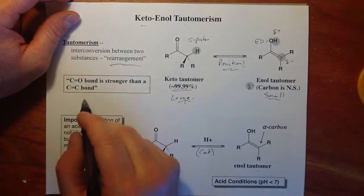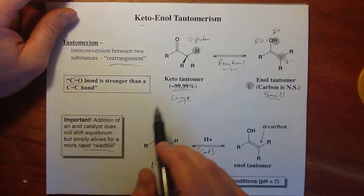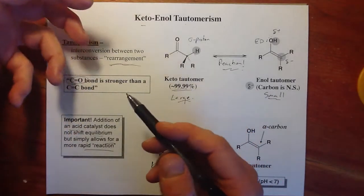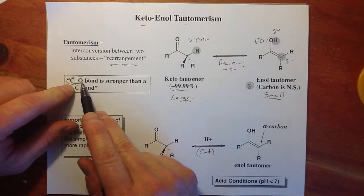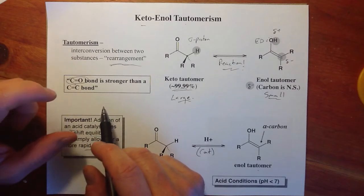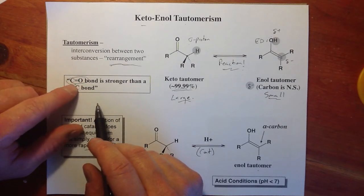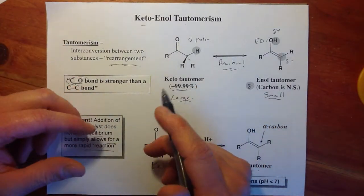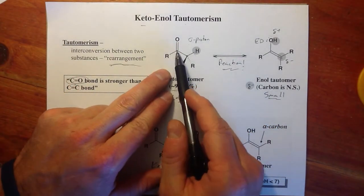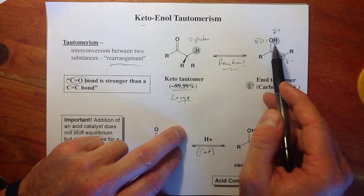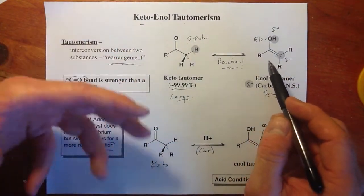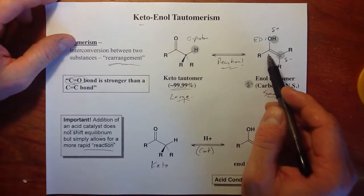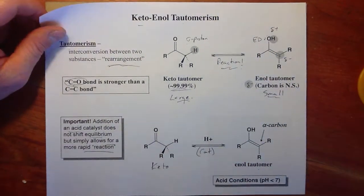Let's talk about why the keto form is favored. Generally, carbonyls — like in acyl substitution — you want to reform the carbonyl because there's strength in the C=O double bond that we want to regain. The keto form has a carbonyl; the enol does not. The C=O in a polar environment has more stability than the C=C double bond.